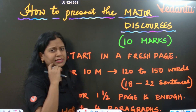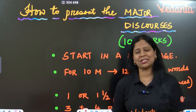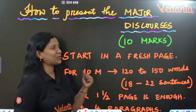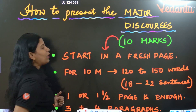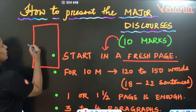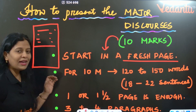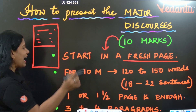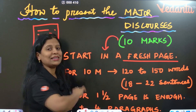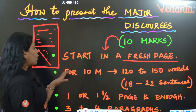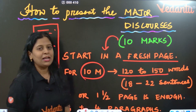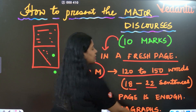How to present the major discourses? This is very very important in English paper presentation. Major discourses are for 10 marks — that is a high-weightage question. You have to start a major discourse on a fresh page. For example, if some answer has been written till half of the page, do not start letter writing in the middle of that page. Leave that space and start the major discourse fresh from the next page. You have to write it in 120 to 150 words, with a minimum of 18 to 22 sentences.